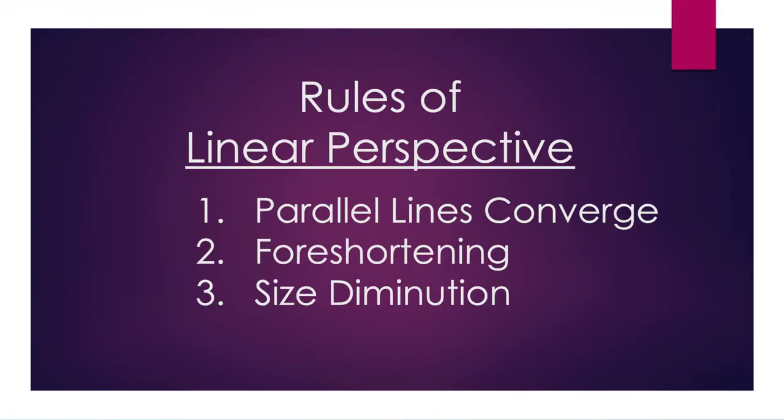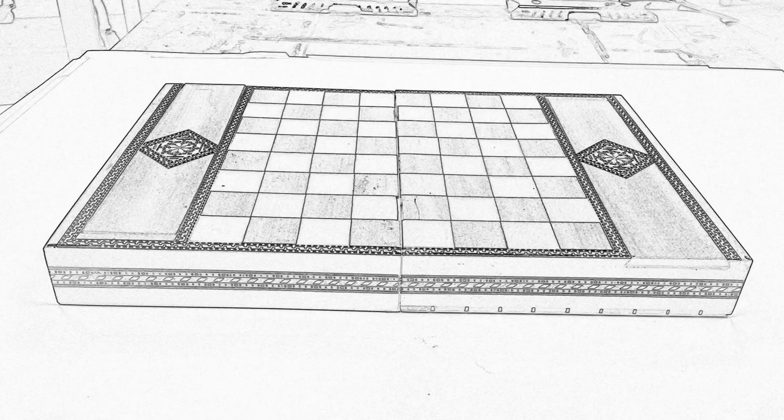Rules of perspective. There are three rules of perspective. One, parallel lines converge. Two, foreshortening. And three, size diminution.